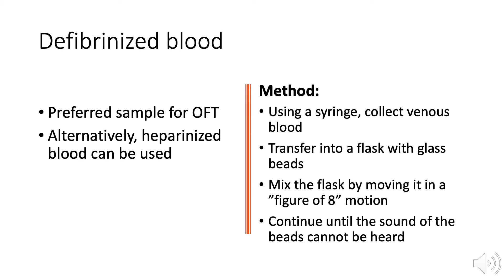Both of these methods use defibrinized blood. Fibrin is a factor used in the clotting process, so to remove fibrin, collect venous blood using a syringe, then transfer the blood into a flask with glass beads. The glass beads activate the clotting process. Agitate the flask in a figure-of-eight motion — you'll notice the glass beads make a sound as they hit the walls. Continue agitating until the sound of the beads can no longer be heard, meaning the beads have sufficiently activated clotting and fibrin strands have formed clots around the glass beads, which dampens the sound.